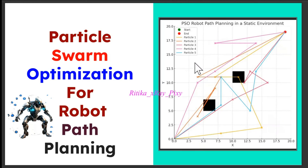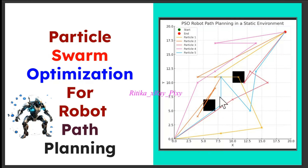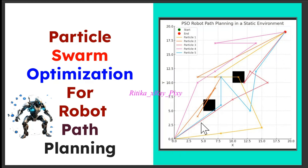Here you can see in the graph different particles making paths for the robot in the starting environment, with two blocks as fixed obstacles. Each particle's path is represented by lines connecting waypoints, starting from the green starting point to the end destination point. These particles explore different paths while avoiding obstacles.